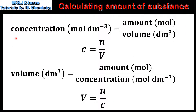The equation can be rearranged to calculate concentration or volume. To calculate the concentration in moles per decimeter cubed, divide the amount in moles by the volume in decimeters cubed. And to calculate the volume in decimeters cubed, divide the amount in moles by the concentration in moles per decimeter cubed. The use of these equations will be covered in a separate video.